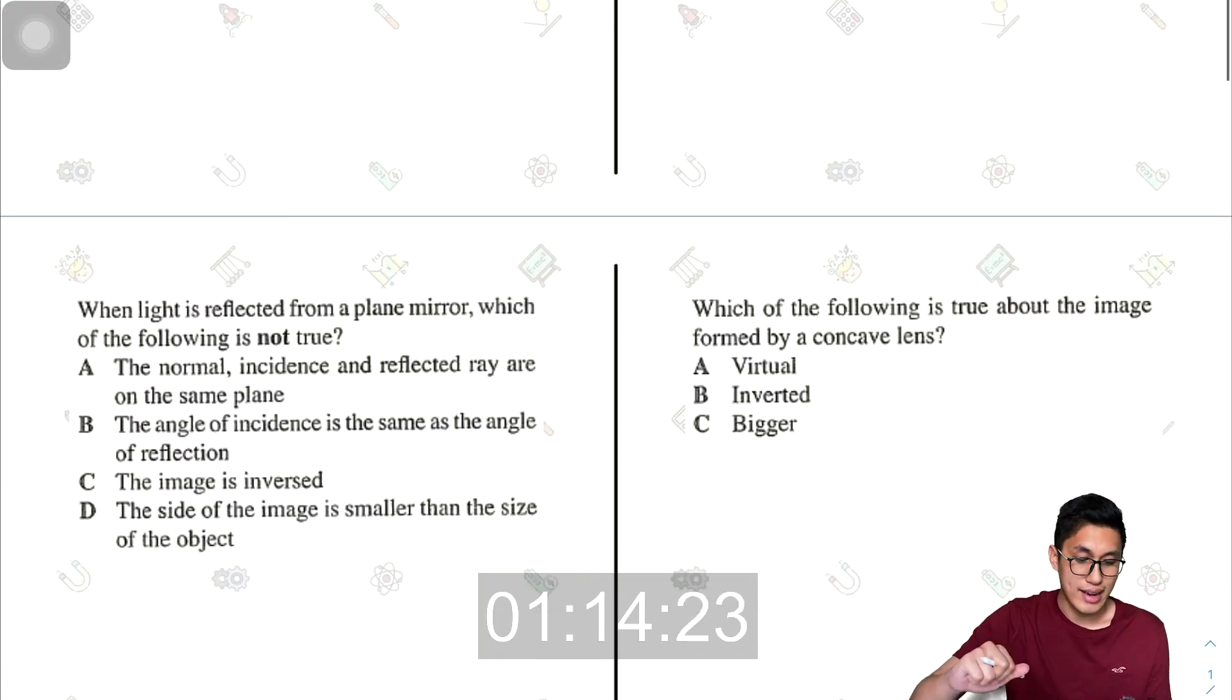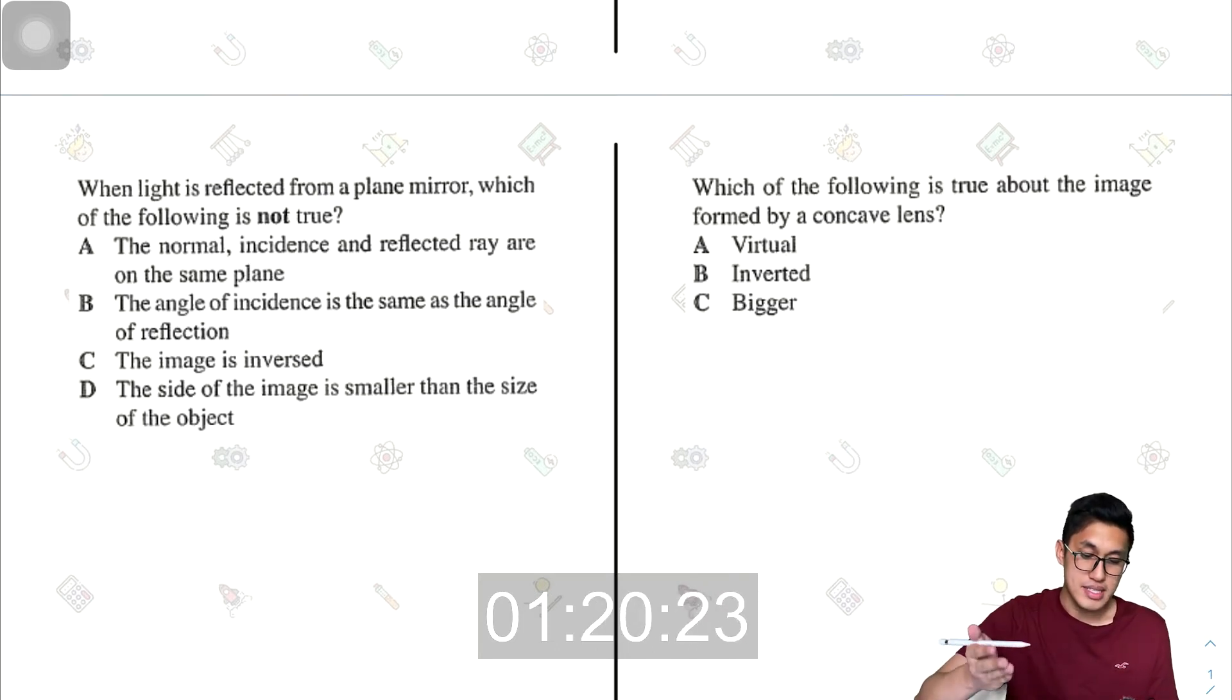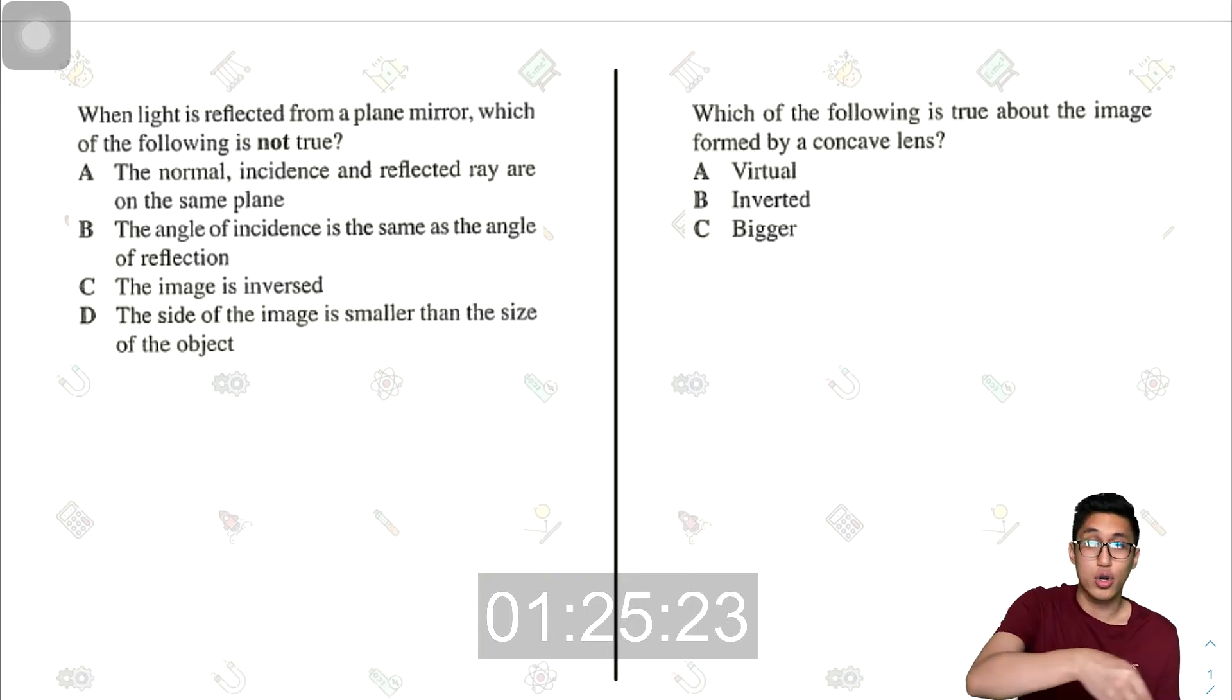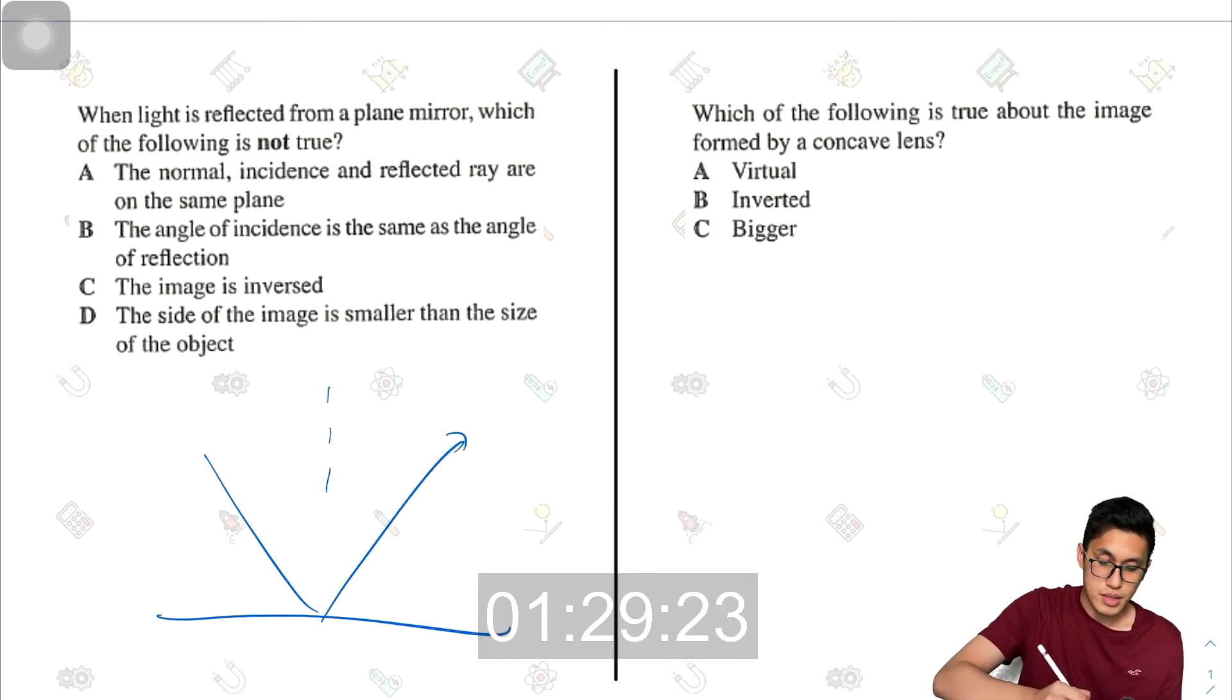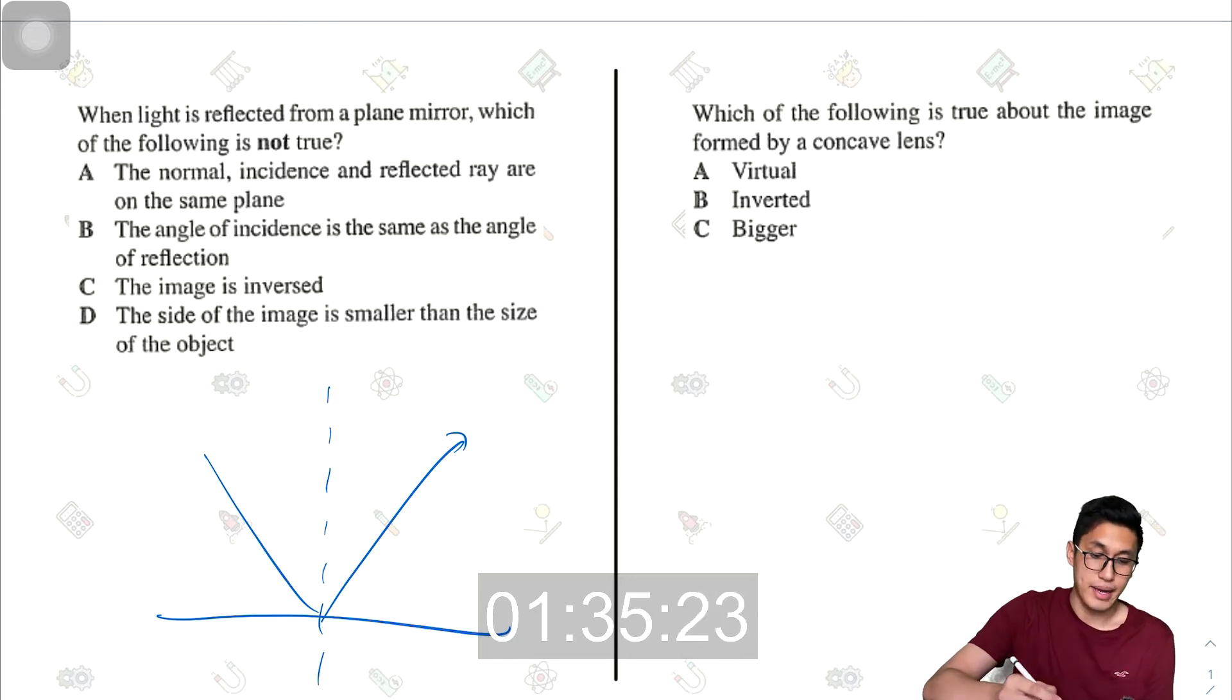Next, when light is reflected from a plane mirror, which of the following is not true? The normal incidence and reflected ray are on the same plane. This one is true because that is why we can draw a reflection diagram as such. The angle of incidence is the same as the angle of reflection. That's right, because I has to be equal to R.